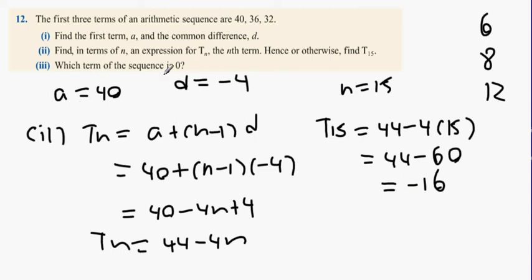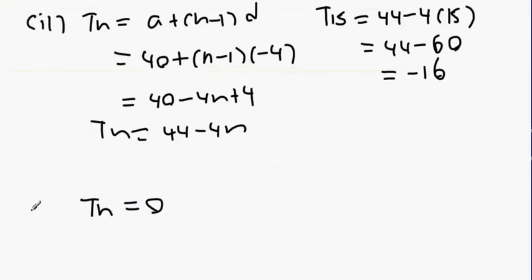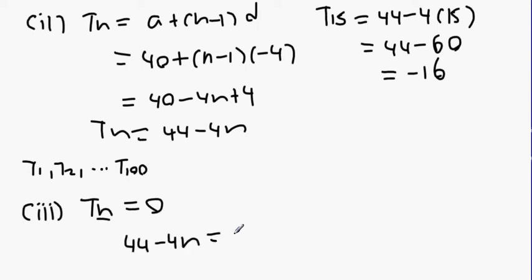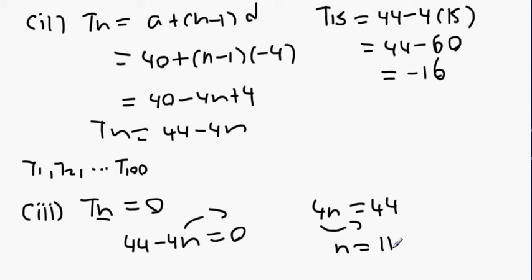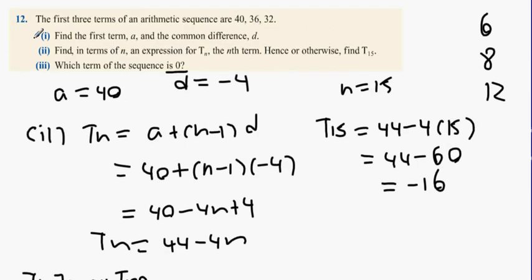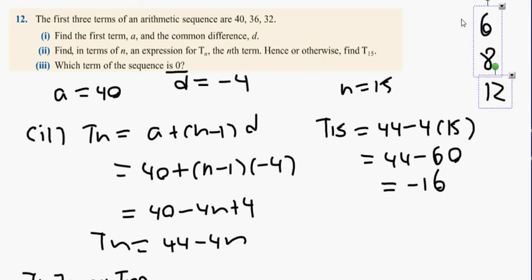Which term of the sequence equals 0? Set Tn equal to 0: 44 minus 4n equals 0. Bringing 4n to the other side gives 4n equals 44, so n equals 11. Therefore it is the 11th term of the sequence that equals 0.